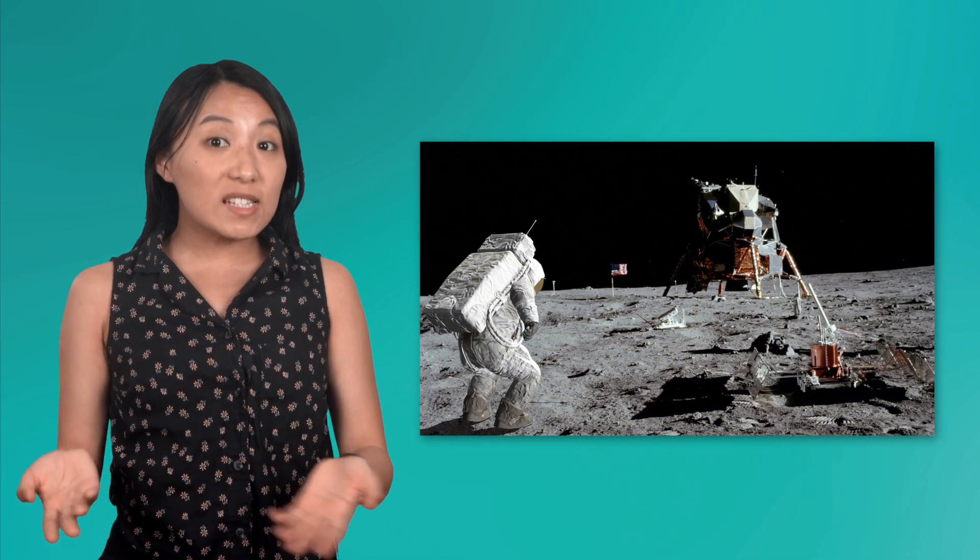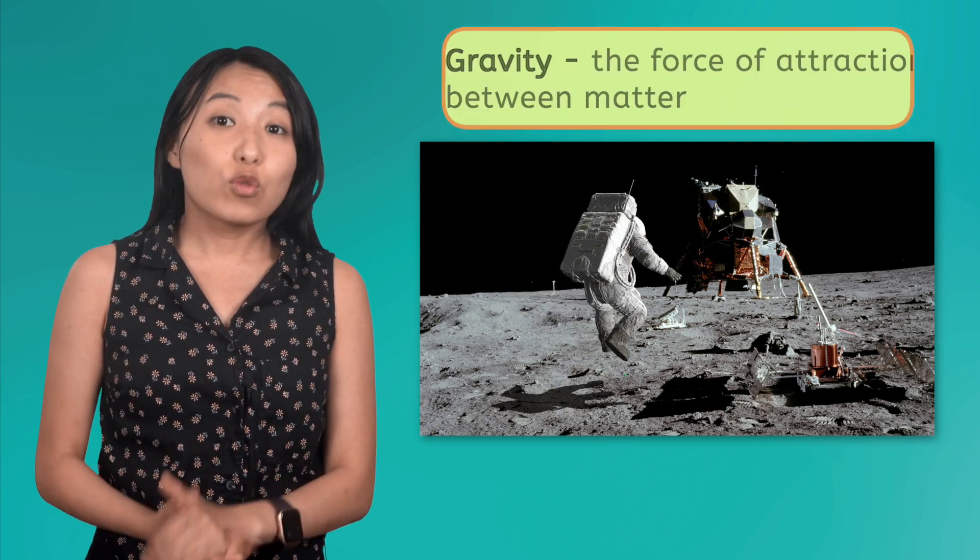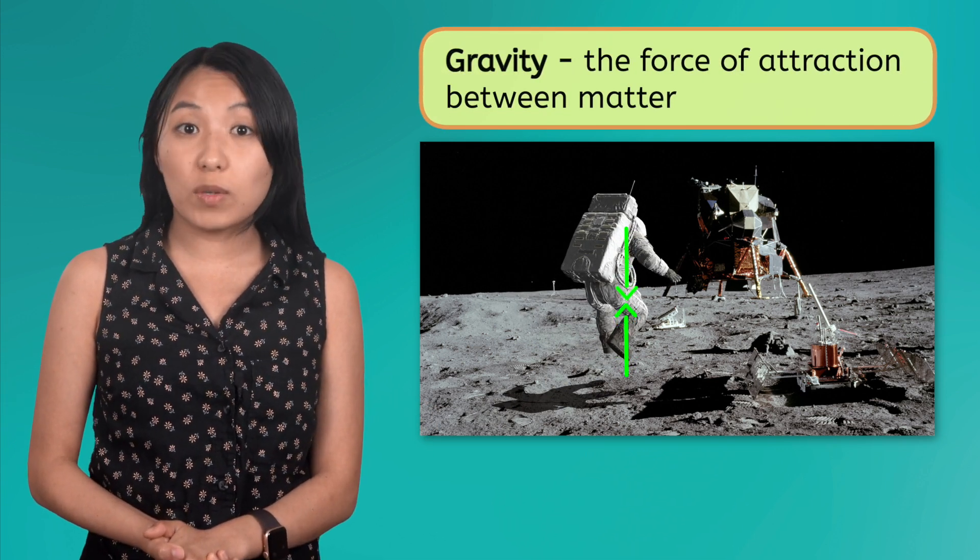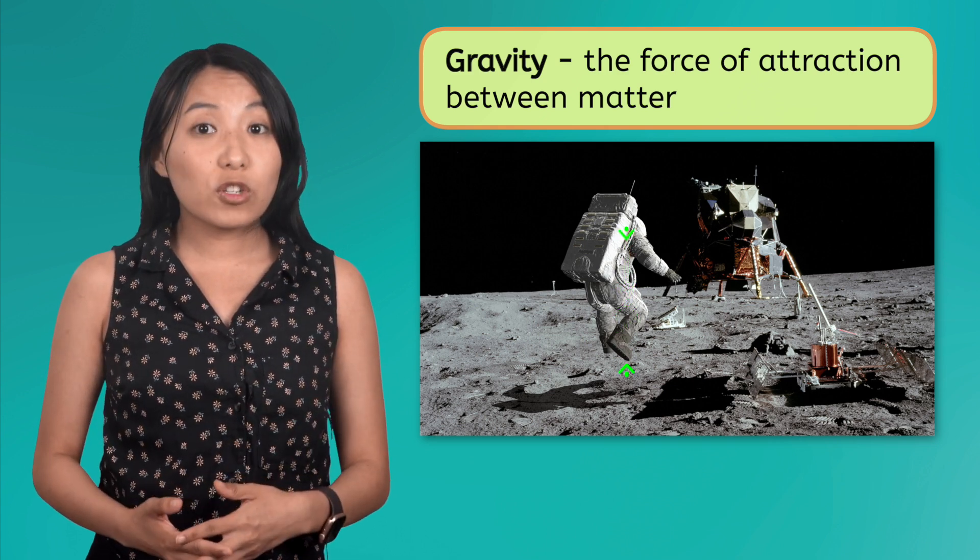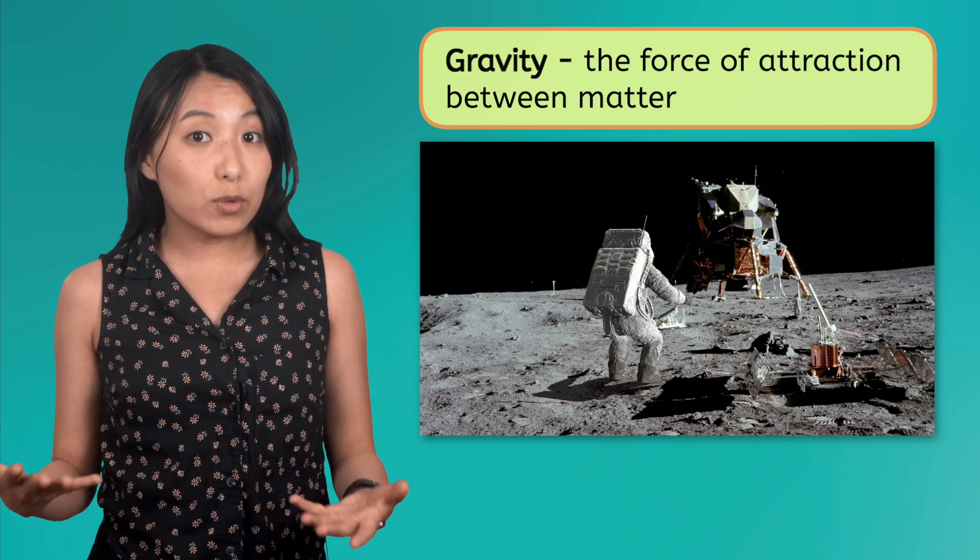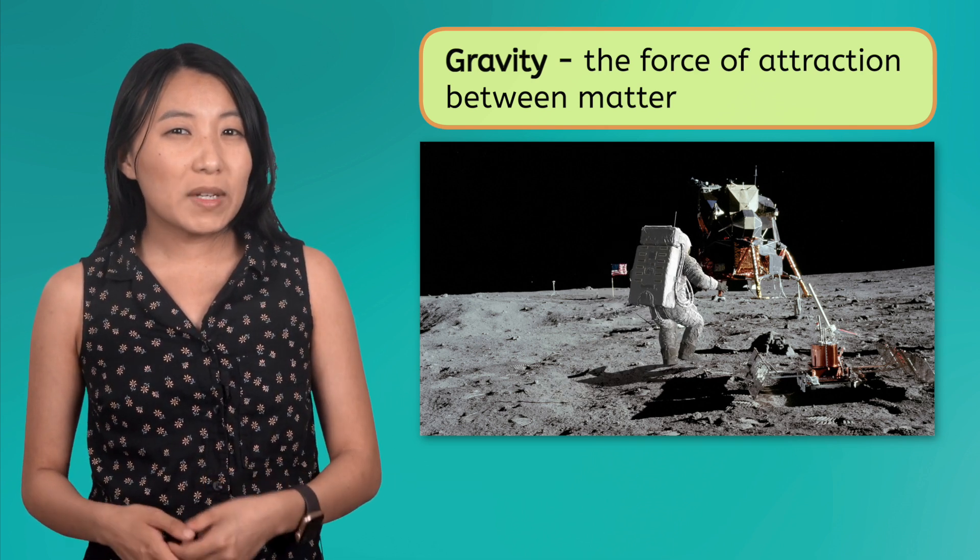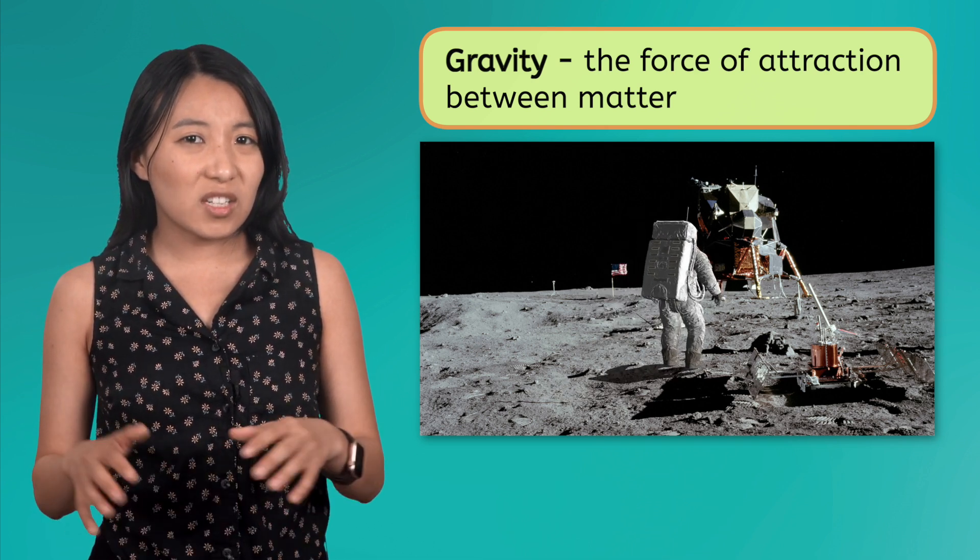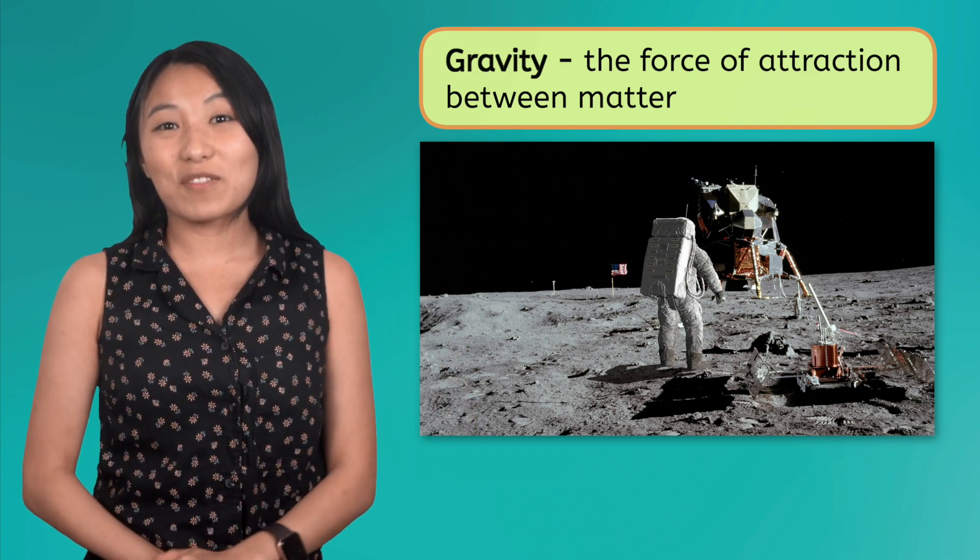Now, if we did manage to invent spacesuits that could withstand the heat, what about gravity? Gravity is the force of attraction between matter, in this case between the astronaut and the planet. Remember, Mercury is about the size of our Moon and Venus is about the size of Earth. So, would we actually be able to stand on each or would we float away? Pause your video and record your prediction.